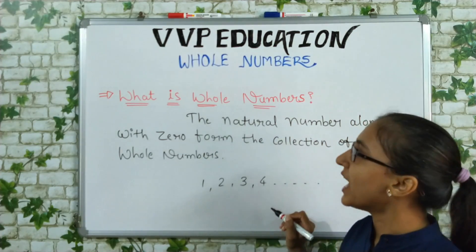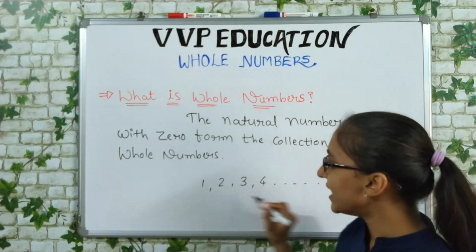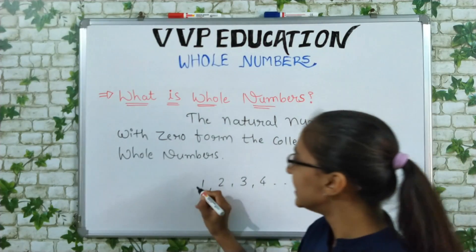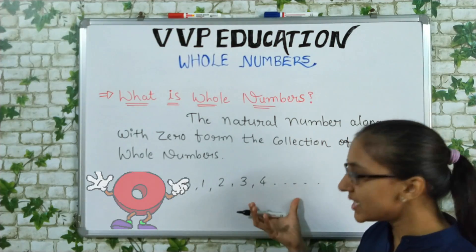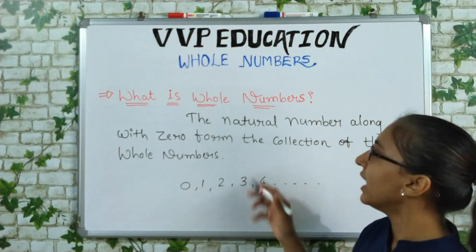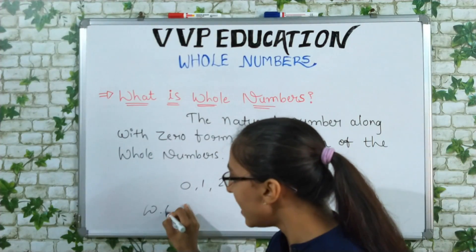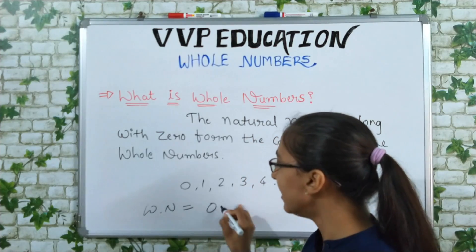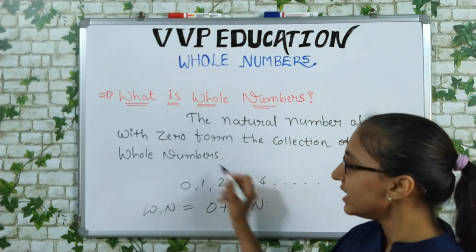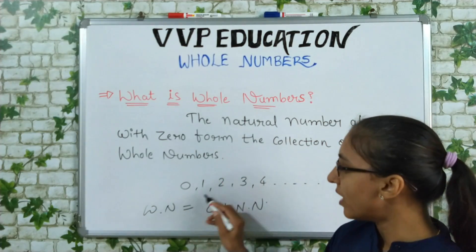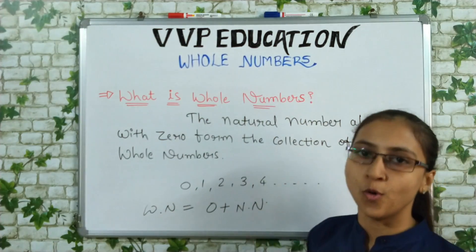Here is our concept of whole number. Because this is the natural number series, if I am writing zero, then this new series that we are getting — that is our whole number. So whole number is nothing but zero plus natural number.